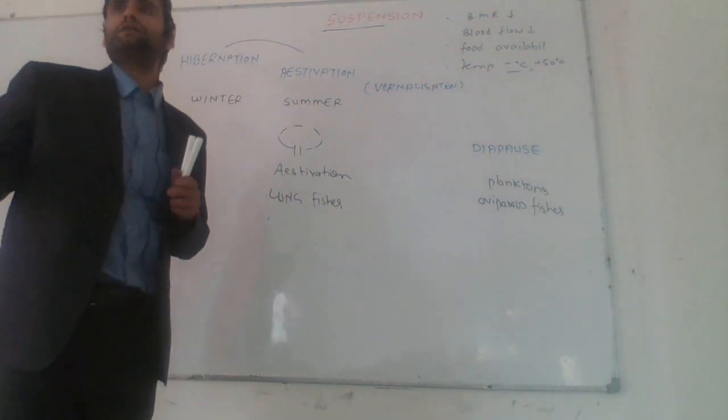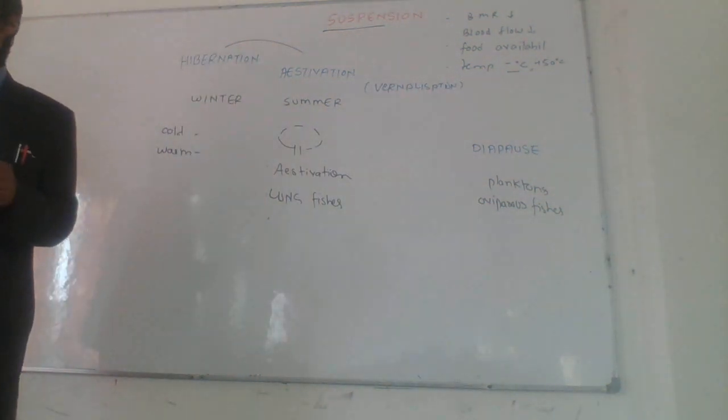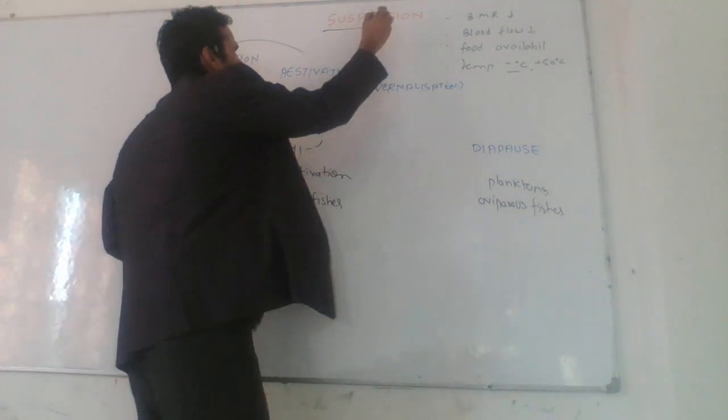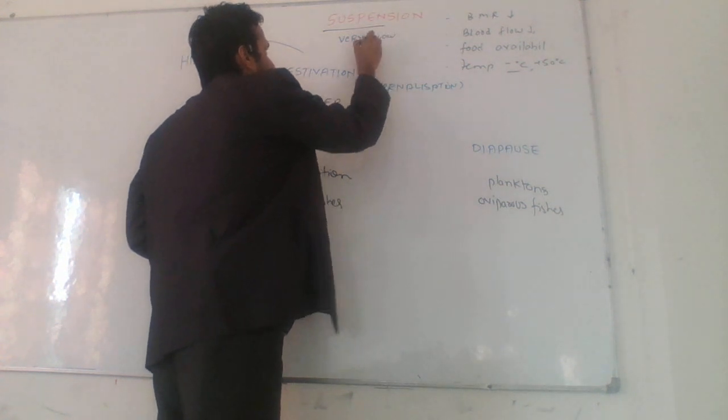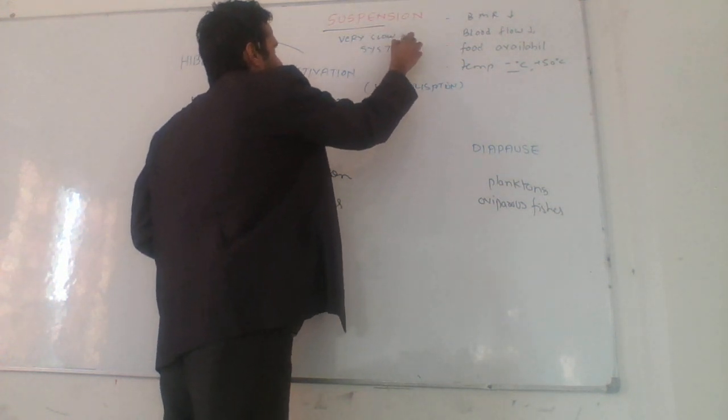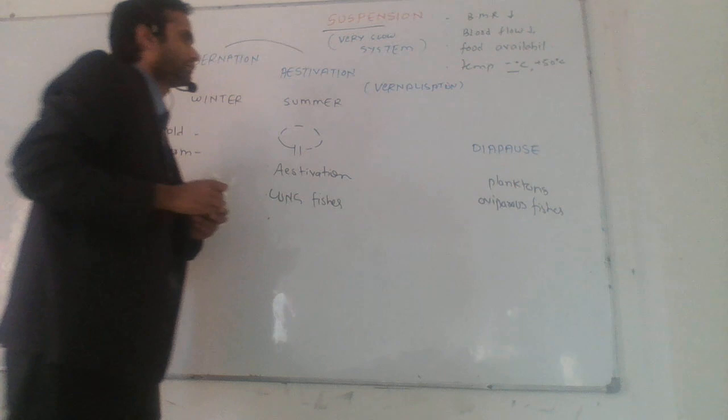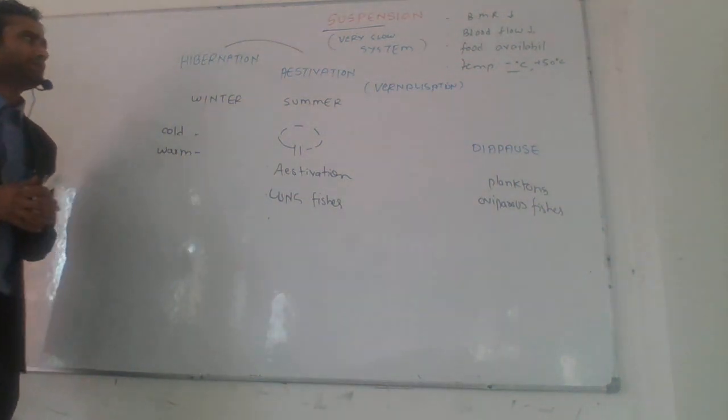Some embryos do not grow due to the suspension stage. Suspension means very slow body systems. All the systems are very slow. Diapause, estivation, and hibernation.